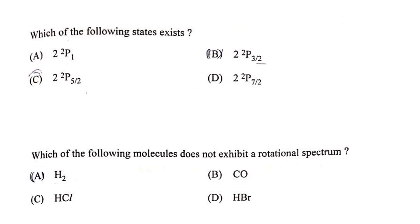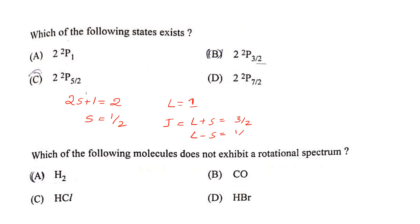Which of the following spectral states exist? With multiplicity 2S+1 = 2 (so S = 1/2) and for a P state L = 1, J ranges from 3/2 to 1/2. Since the 1/2 option is not among the choices, option B is the correct answer. H₂ molecules do not exhibit a rotational spectrum since they do not have a permanent dipole moment.